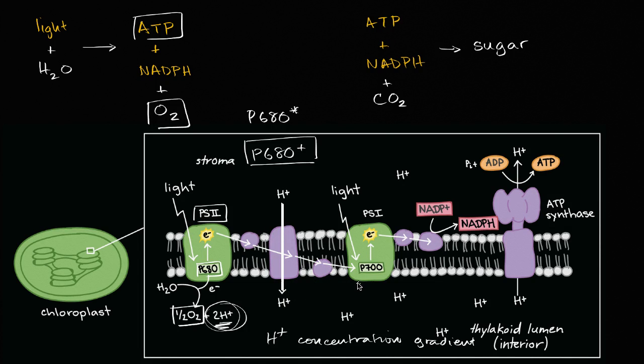But that's not the entire light-dependent reactions. That electron can eventually make its way over to photosystem I, and why is it called photosystem I? Well, it's because the first one that was discovered.